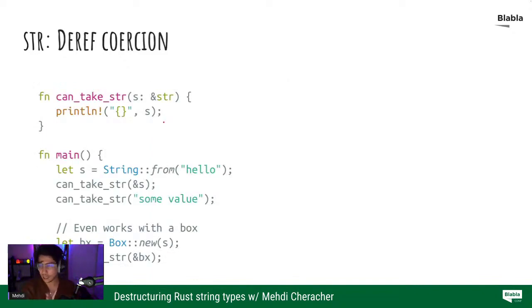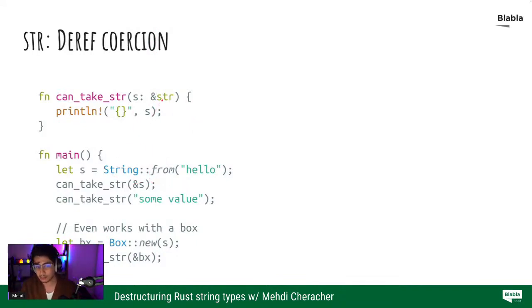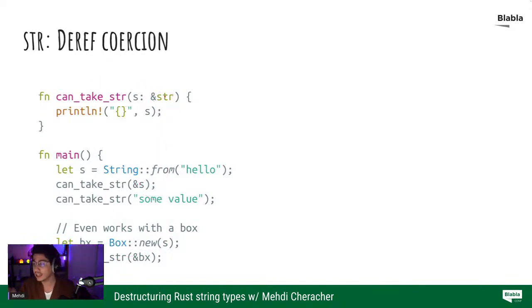Here I'm going to take a side note on deref coercion. This has nothing to do with strings on their own, but when used within the standard library — for example, some functions take a &str, but at the same time you can create a String and pass a reference to it where the function takes a &str. This works because the compiler is trying to be helpful and inserts a deref call, coercing the String reference into a &str. It also works with multiple layers — the compiler will do this over multiple layers to match types.